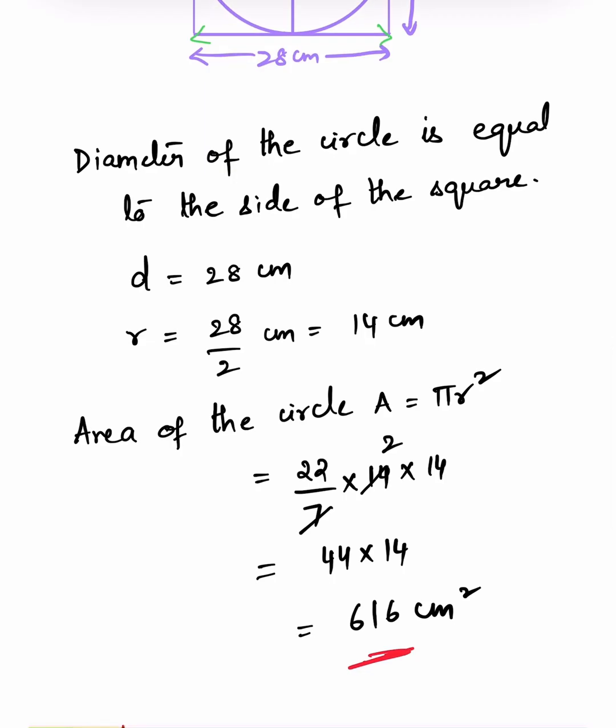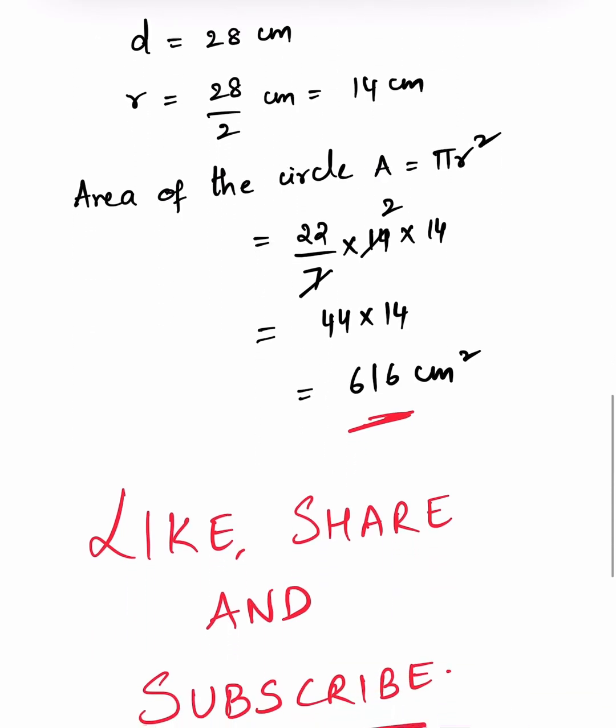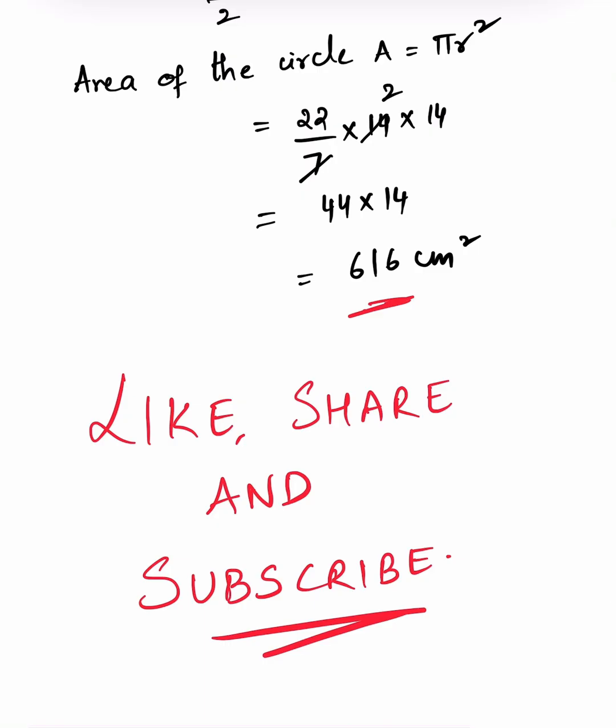So area of the circle is A equals π r square, 22 by 7 into 14 into 14, which is equal to 44 into 14, which is equal to 616 cm square. Like, share, and subscribe for more videos on area of plane figures.